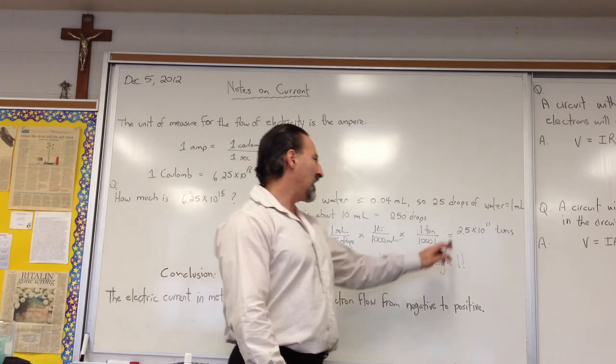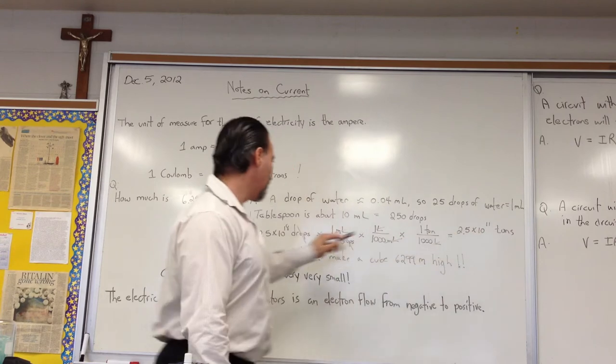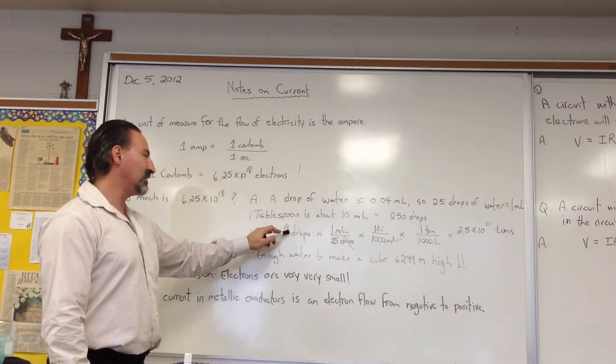So, you would have 2.5 times 10 to the 11 tons of water if you had 6.25 times 10 to the 18 drops.